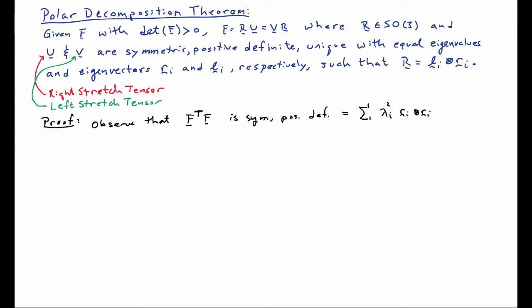For the proof, first observe that F transpose F is going to be symmetric positive definite. That means I can have a spectral representation for it. I'll write the spectral representation with λ_i squared as the eigenvalues and R_i as the eigenvectors. The labels chosen for the eigenvalues and eigenvectors are arbitrary, but they'll match up with the statement of the theorem. F transpose F is clearly symmetric, and it's positive definite because applying it to a vector from both sides always gives a number greater than or equal to zero, unless that vector is identically zero.